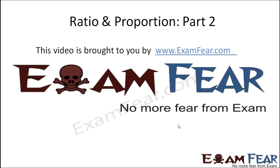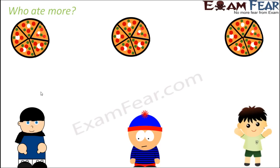Hello friends, this video on ratio and proportion part 2 is brought to you by examfear.com. Here we have one more example. We have three kids — let's name them A, B, and C so that it becomes easy to refer to them.